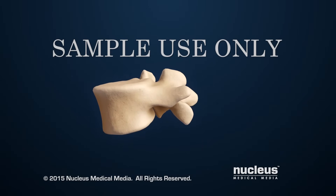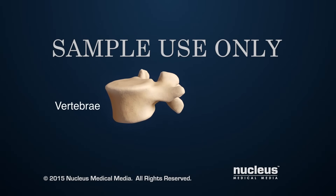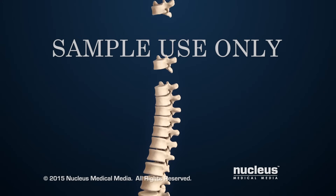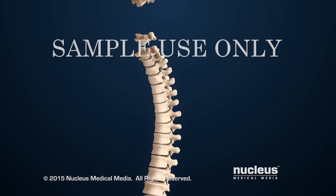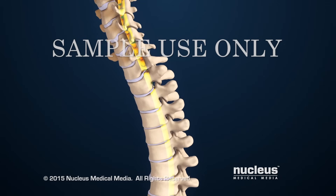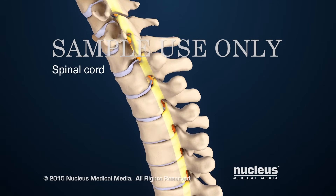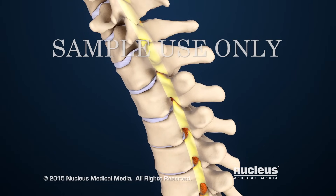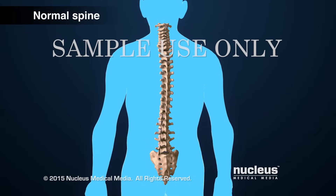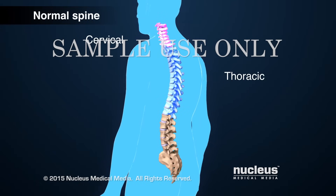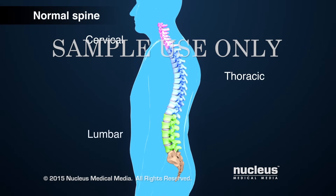The spine is made up of bones called vertebrae, which are stacked on top of each other. The vertebrae protect a bundle of nerve fibers called the spinal cord. It runs through an opening in the center of each vertebra. The main sections of the spine are the cervical, thoracic, and lumbar regions.